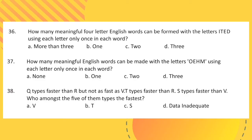Question 38: Q types faster than R, but not as fast as V. T types faster than R. S types faster than V. Who amongst the 5 of them types the fastest?